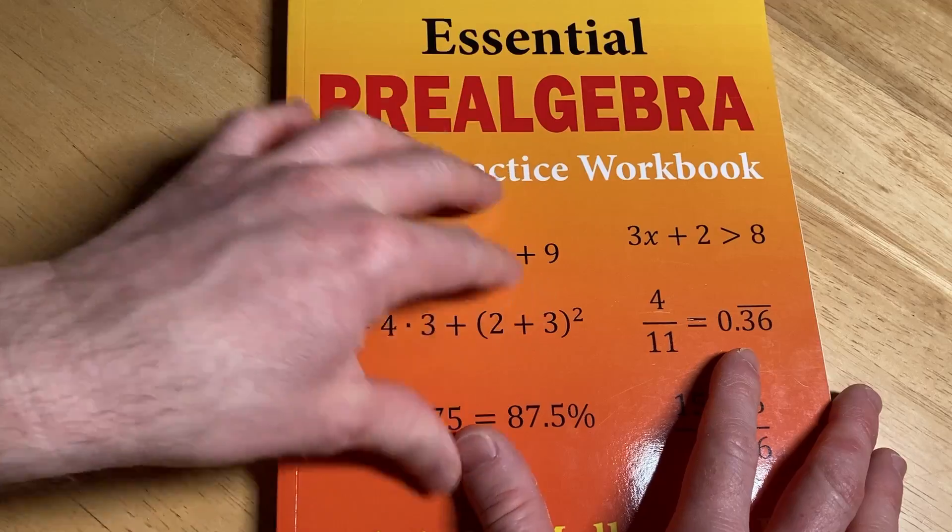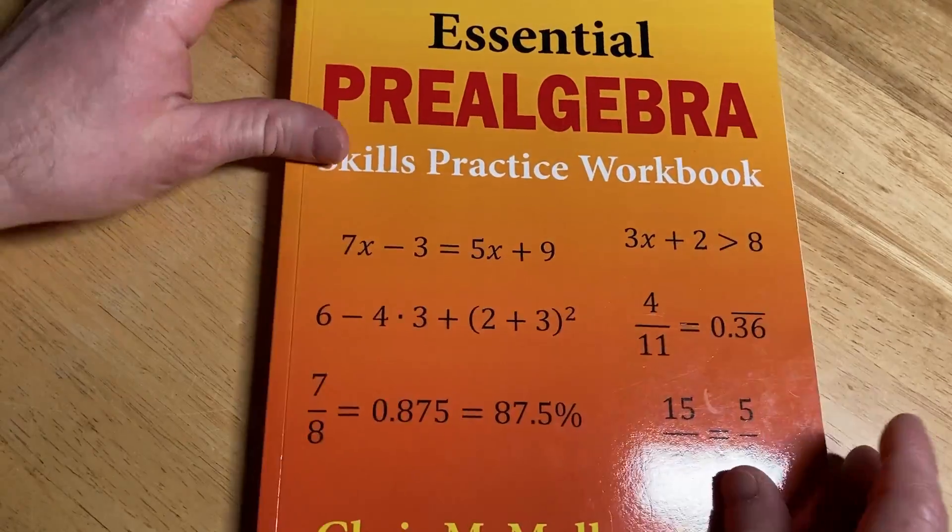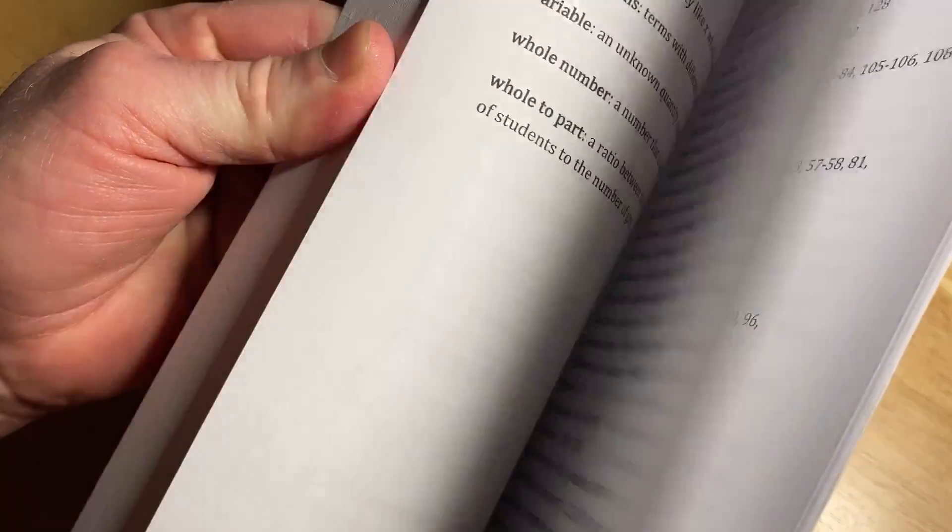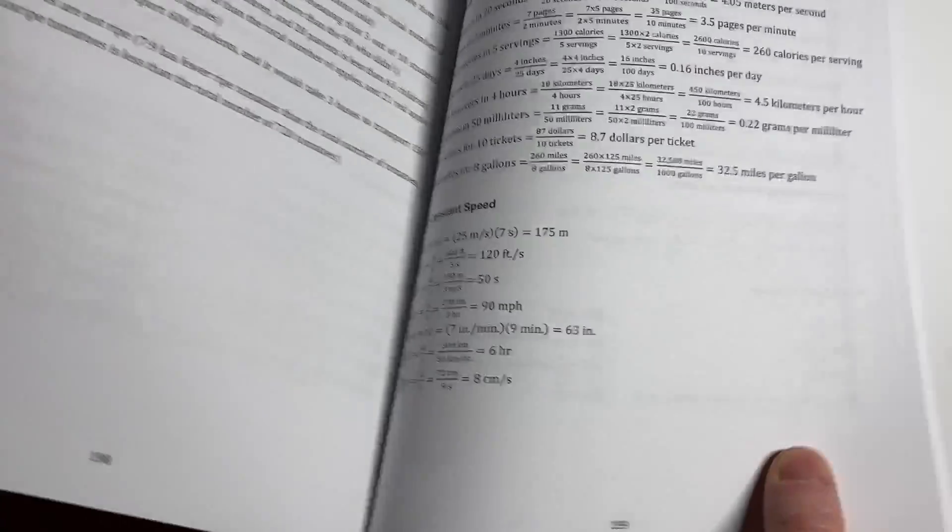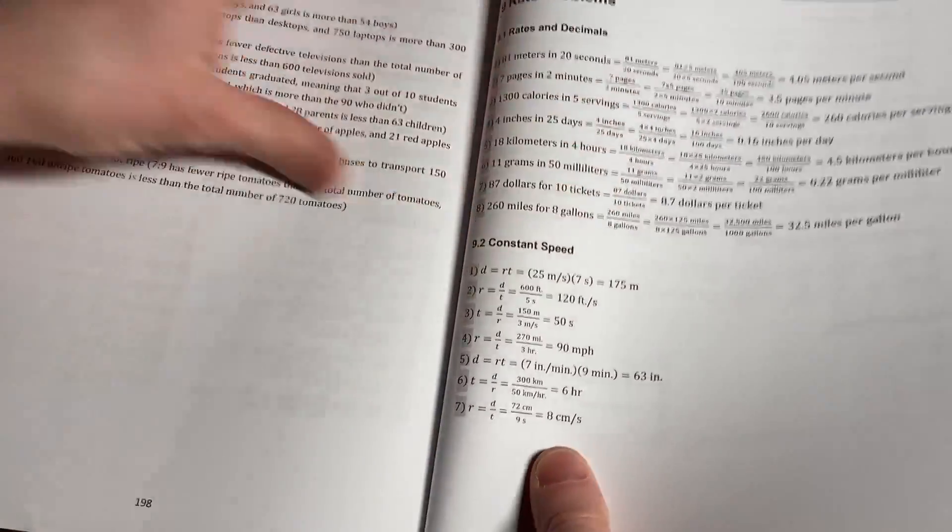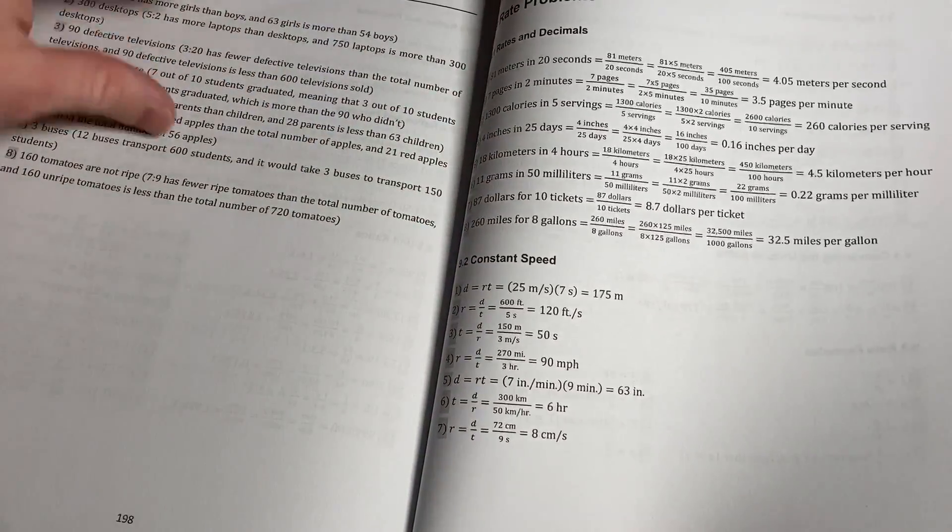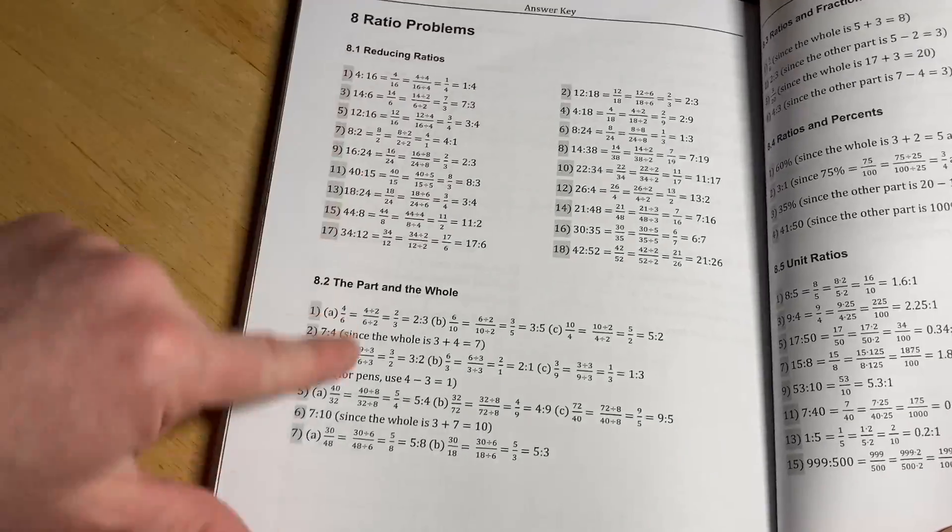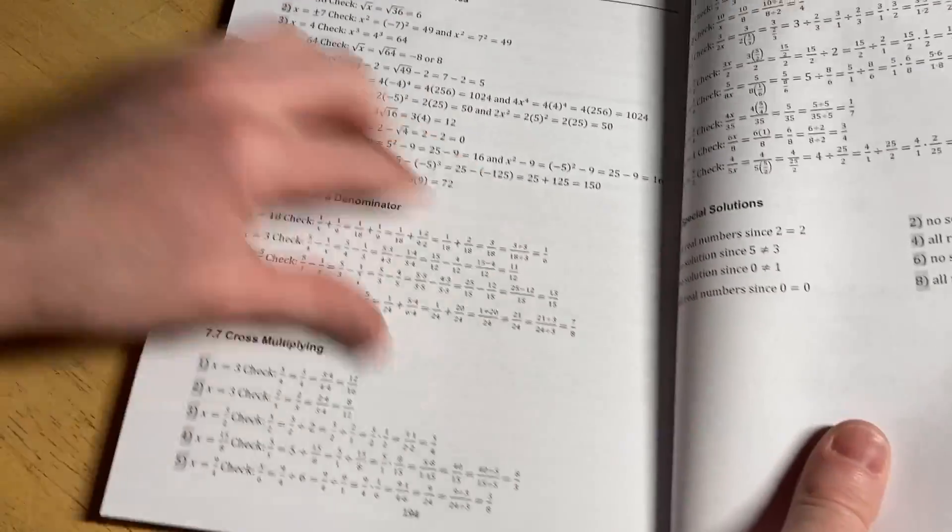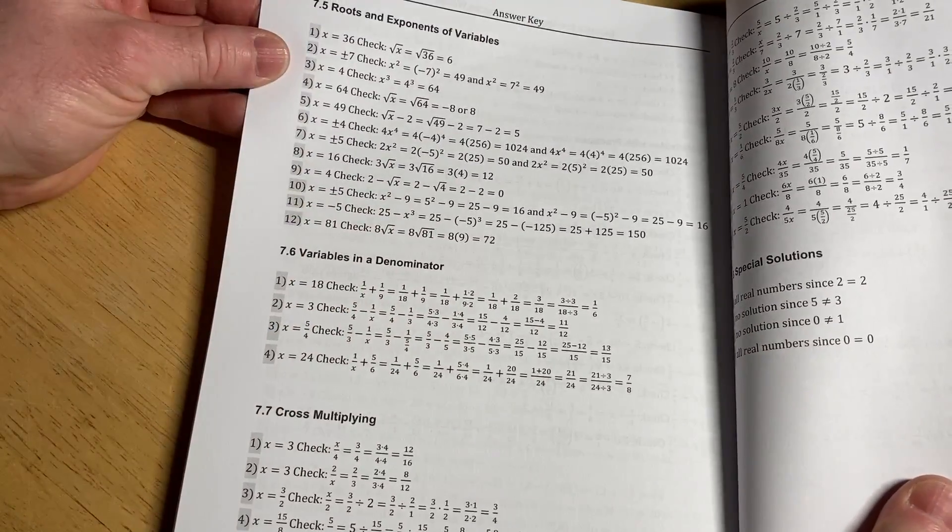By workbook, I mean that it has specific topics and tons of examples, and it has answers. This book has answers to every single problem in the back of the book. You've got answers here, you see, and there is some work done as well for the answers. You see some of the steps here, you see the solutions here in the back. So, this is the answer key.